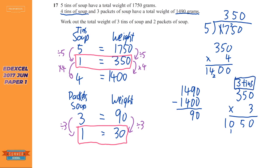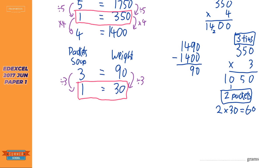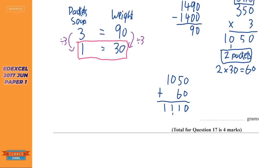And two packets. Well, we can work that out quite easily. Two packets would just be two times 30 because one packet is 30. So it would be 60. So the last thing to do is 1,050 plus 60 is 1,110 grams.